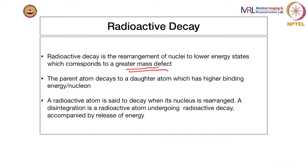The atom that decays is called the parent atom; it decays to a daughter atom which has higher binding energy per nucleon. The mass defect translates to something called binding energy, which will be higher per nucleon in the daughter atom — basically a transition to a lower energy or stable state. A radioactive atom is said to decay when the nucleus is rearranged in terms of atomic number or mass number. There is also a term called disintegrations: a disintegration is a radioactive atom undergoing radioactive decay, and this decay is often accompanied by release of energy in the form of gamma radiation.